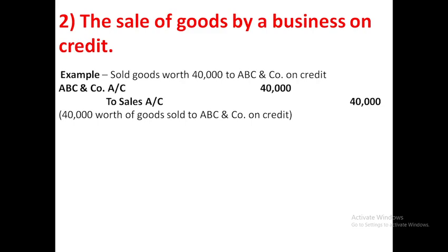So, ABC and Company account debit 40,000, to sales account 40,000. The narration reads: goods worth 40,000 sold to ABC and Company on credit.